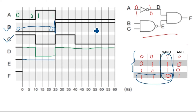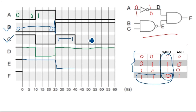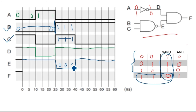Now B has become one, so we need to check the value of C. At this instant, C is also one, so both B and C are one-one, which gives output zero for the NAND gate — E is zero for this duration. Then C becomes zero, and with B already one, one-zero gives output one for NAND. Remember, only when both inputs are one-one do you get output zero. So B is one and C is one only for that segment, giving zero there, and one everywhere else.